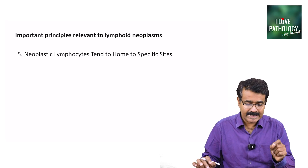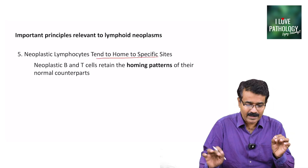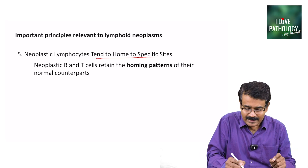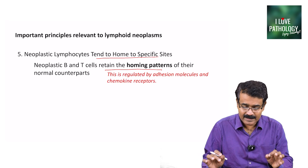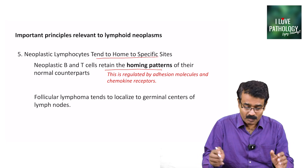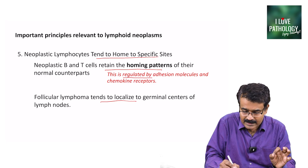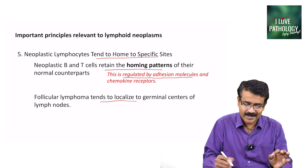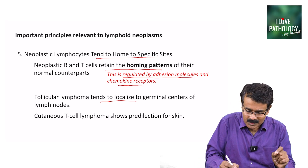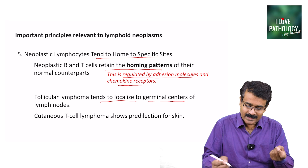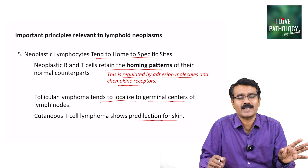The next important principle is that neoplastic lymphocytes — whether B cell or T cell — tend to home to specific sites. Neoplastic B cells or T cells retain the homing patterns of their normal counterpart, regulated by various adhesion molecules and chemokine receptors. For example, follicular lymphoma tends to localize to the germinal centers of lymph nodes. Similarly, cutaneous T-cell lymphomas show predilection for skin.